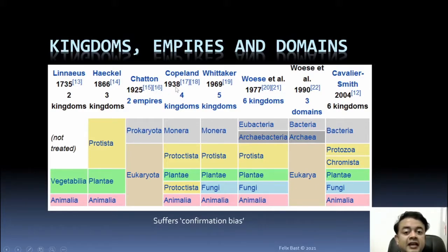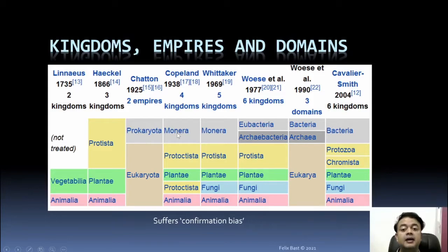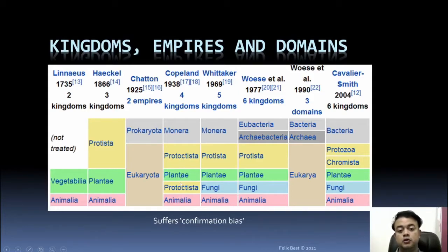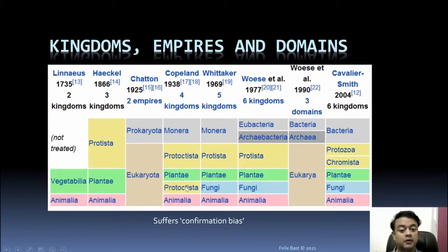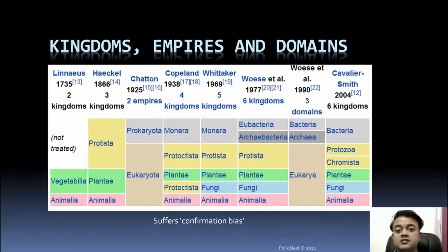Then in 1938, Herbert Copeland put forward a four-kingdom classification. He introduced Bacteria (Monera), then Protocytista, Plantae, Protocytista again, and Animalia — two Protocytista kingdoms, because some are plant-like protists. That is why he erected two separate kingdoms for protists and Animalia.